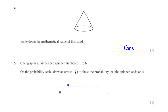Chang spins a fair 6-sided spinner numbered 1 to 6. On the probability scale, draw an arrow to show the probability that the spinner lands on 4. The probability that the spinner lands on 4 equals the number of 4s on the spinner, which is 1, divided by the total number of numbers on the spinner, which is 6. So we have 1 over 6. The scale has been split into 6 equal parts, so we put the arrow on the first mark to indicate 1 over 6.